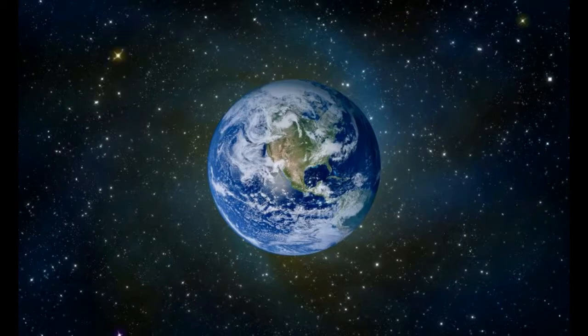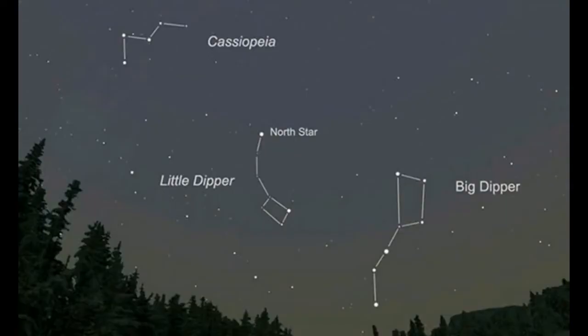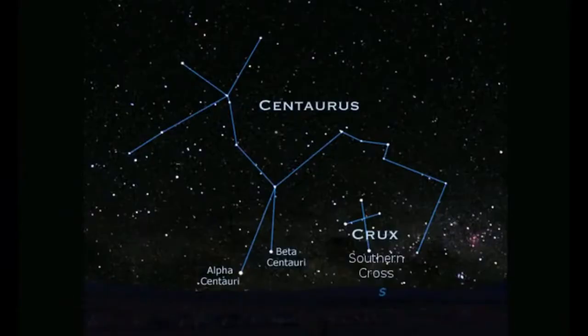In the Northern Hemisphere, we look at the stars and we see star formations we all recognize, such as the Big Dipper, the Little Dipper, and Cassiopeia. But in the Southern Hemisphere, these constellations cannot be seen at all, and different star formations are seen, such as the Southern Cross and Centaurus.